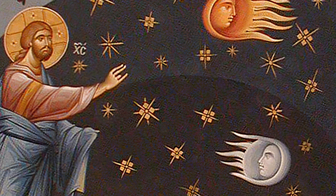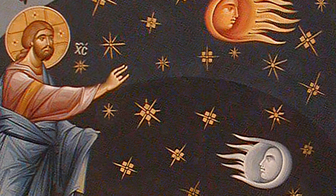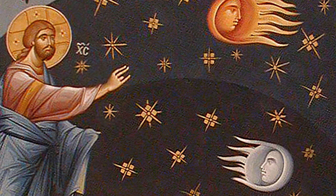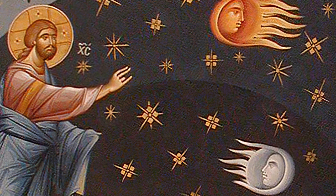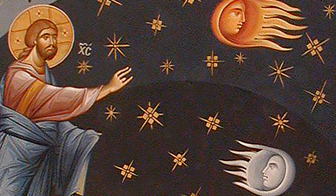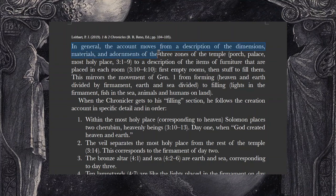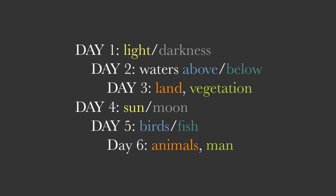Moving on with Lightheart, he's going to track through chapters 3 and 4 and detect a creation week motif. In Exodus 25 through 31, the tabernacle plan is organized as seven speeches by Yahweh that follow the seven days of creation. Chronicles seems to be doing something similar. He writes: 'In general, the account moves from a description of the dimensions, materials, and adornments of the three zones of the temple — porch, palace, most holy place — to a description of the items of furniture placed in each room: first empty rooms, then stuff to fill them. This mirrors the movement of Genesis 1 from forming to filling.'